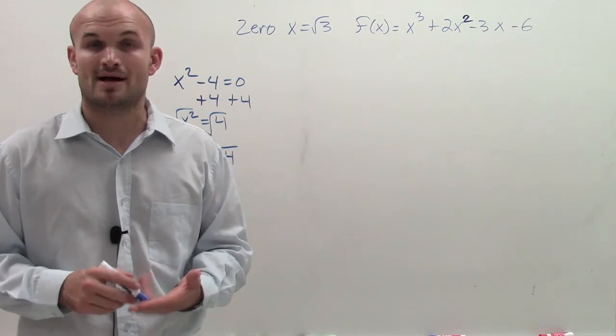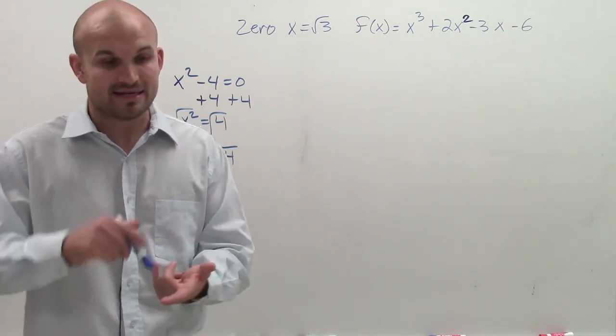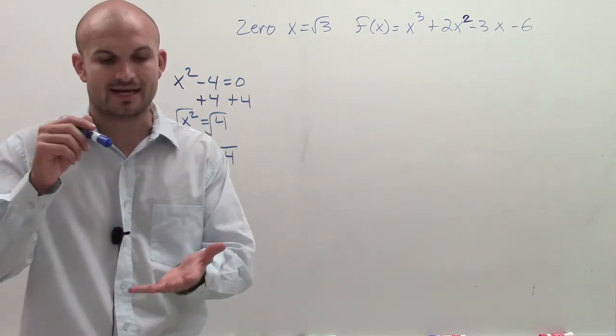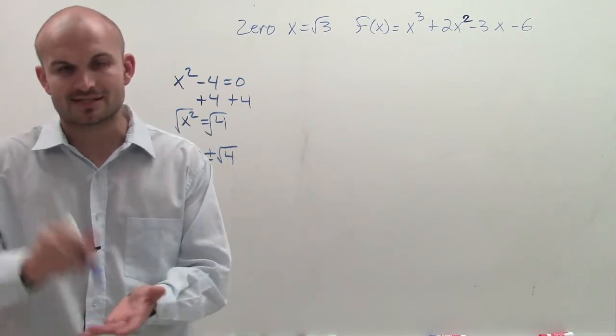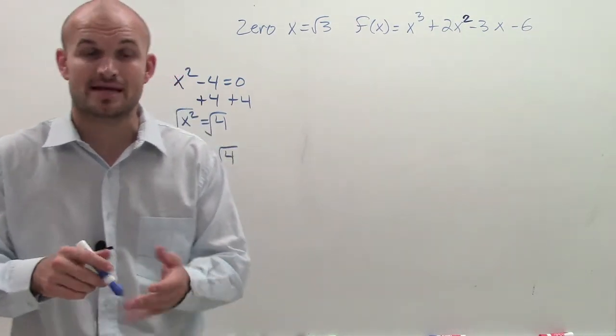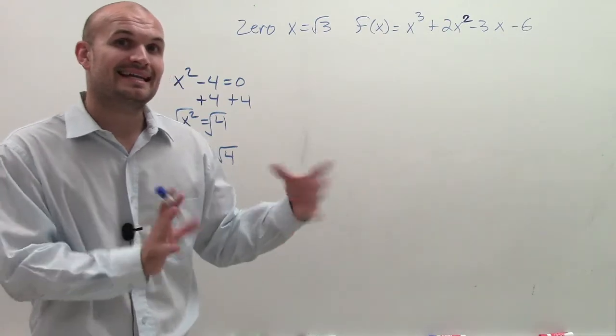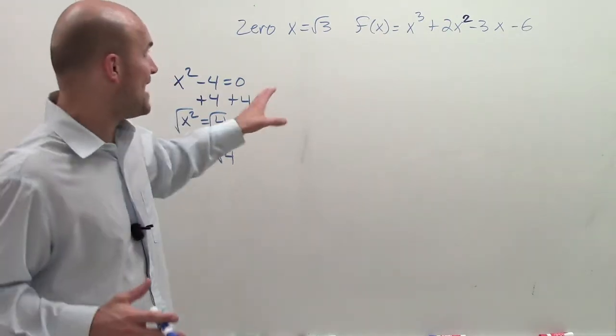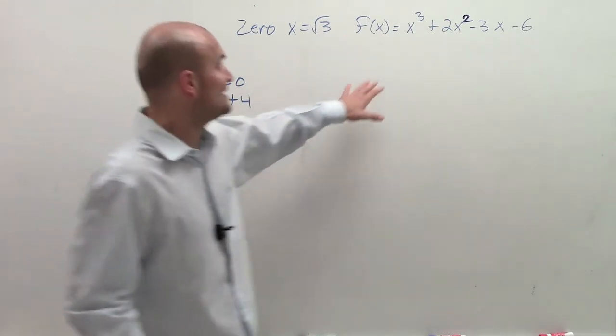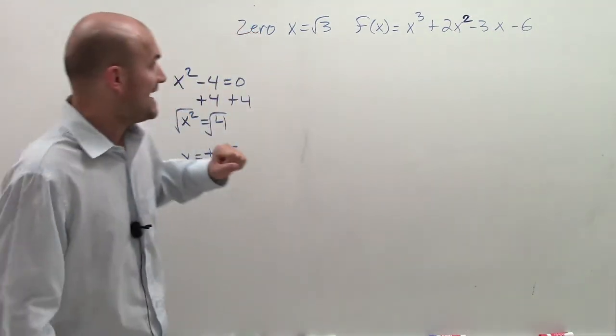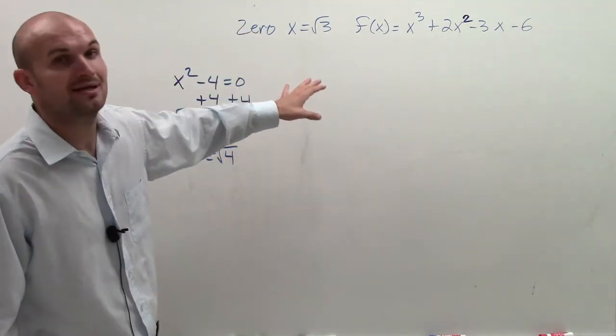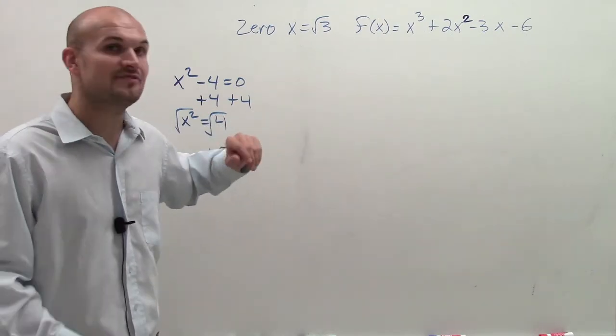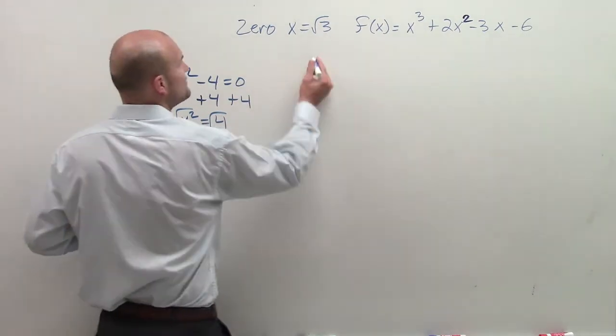Before we can do that, we know that it's a zero. So therefore, it's a zero, that means it's a root, it's a solution, it is also an x-intercept. But what that means is it evenly divides. So the factor of that is going to evenly divide into that polynomial. And what we can do, since it evenly divides into it, we can use synthetic division to prove that. So I'm going to use synthetic division.